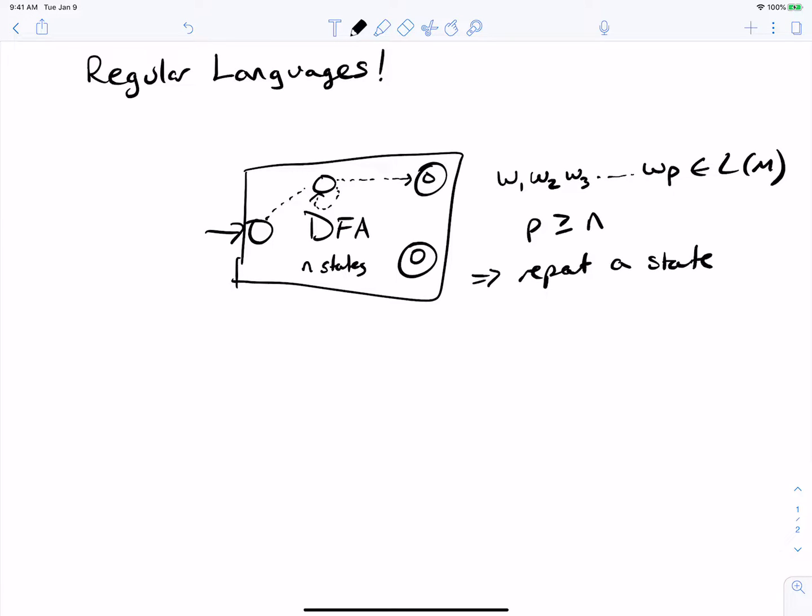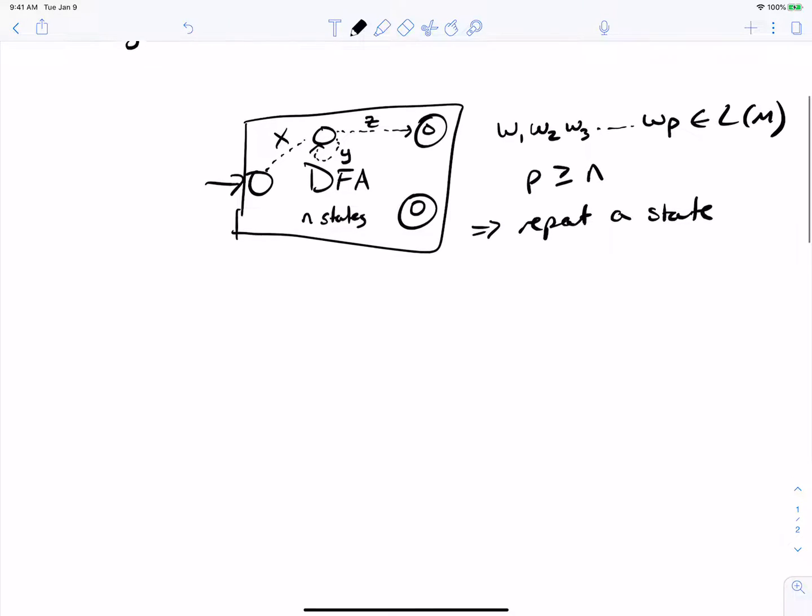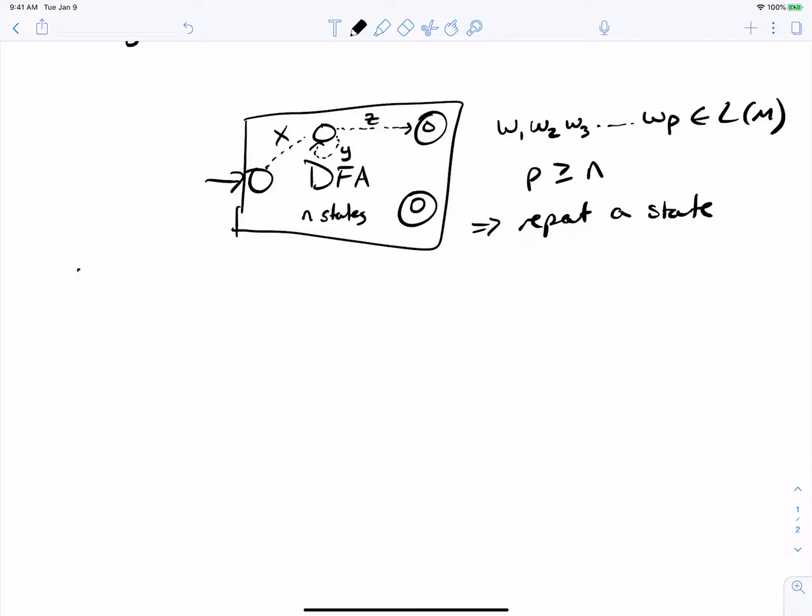So what we can realize is that we can write this string in terms of its three parts: x, y, and z. These are the labels of the strings that take me from the start state to the middle state, from the middle state to itself, and from that state to the final state.